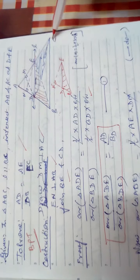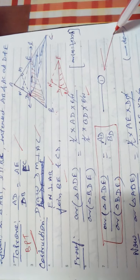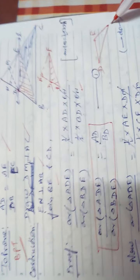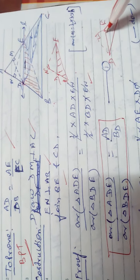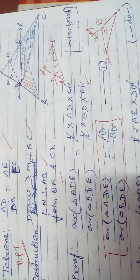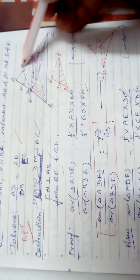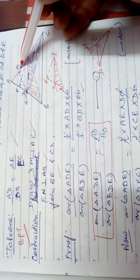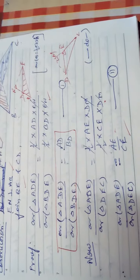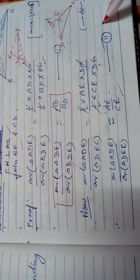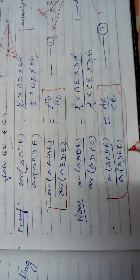Similarly, take triangle ADE with triangle DEC. For this pair, the altitude from D is DM. Taking base AE for ADE and base EC for DEC, we get area of ADE upon area of DEC equals AE upon EC, after the half and DM cancel. So we have two equations: area ADE / area BDE = AD/BD, and area ADE / area DEC = AE/EC.